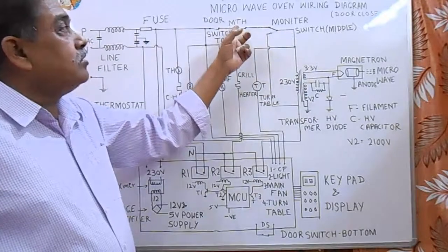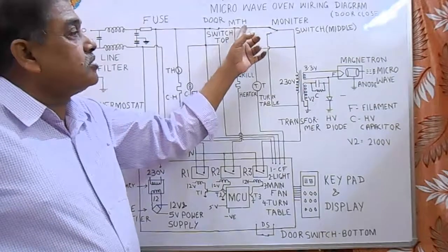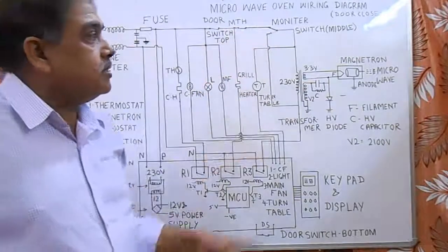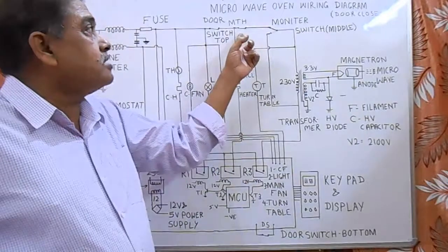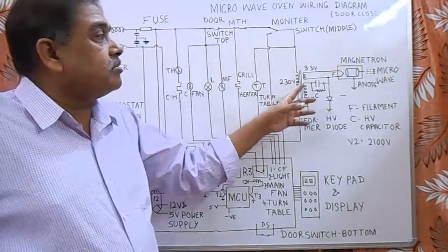This is the magnetron thermostat. Whenever the temperature of the magnetron goes high, it stops the supply to the transformer, and this way the magnetron gets cooled off.